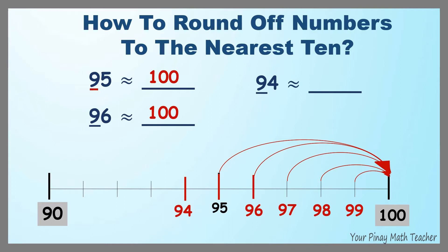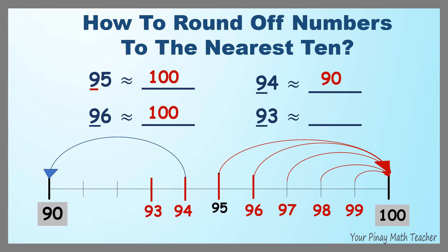How about 94? It is rounded off to 90 since it is nearer to 90 than 100. So 94 is rounded off to 90. Also, 93 is rounded off to 90, and so are 92 and 91 — they are all rounded off to 90.